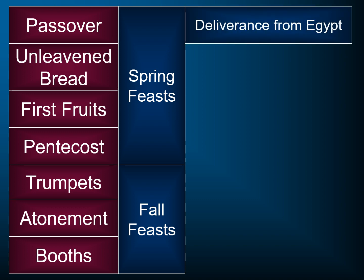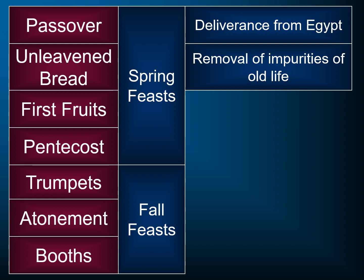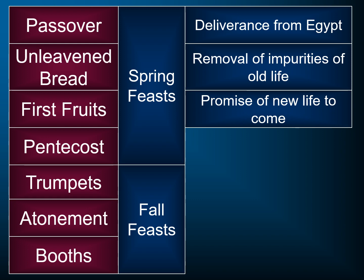The Feast of Passover commemorated the deliverance of the Jewish people from Egypt. That week would begin the whole observance starting with Passover, followed by the week of Unleavened Bread, as they took all the leaven from their homes — actually removed it from the house — to signify that once they had come out of Egypt, they were removing all the impurities of the old life, all the idols, all the religious systems of Egypt, as they were going to follow the Lord. Then the first day of the week following Passover would be the Feast of Firstfruits.